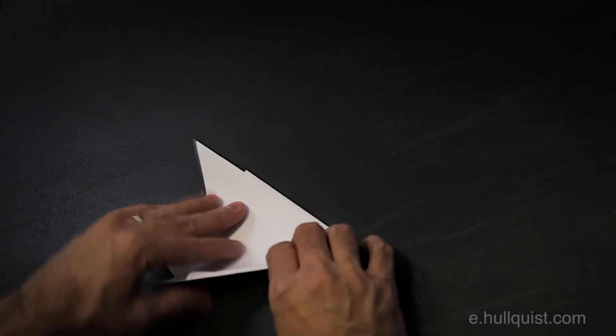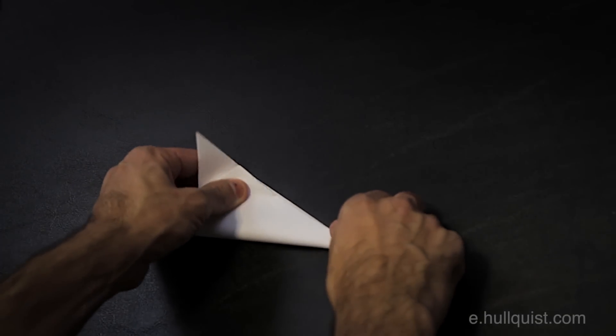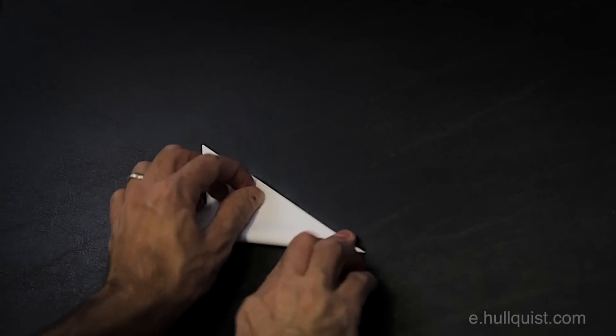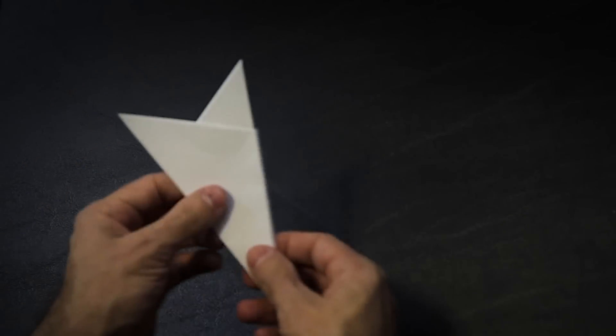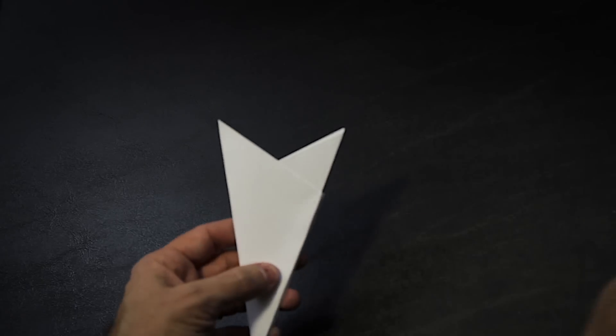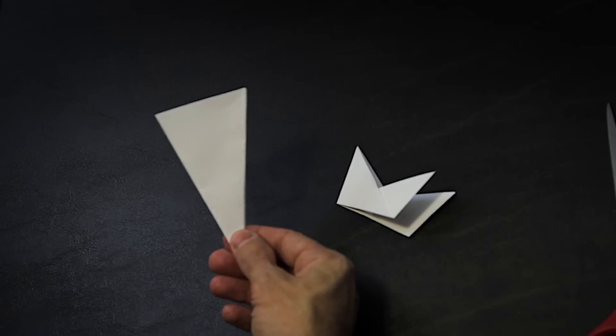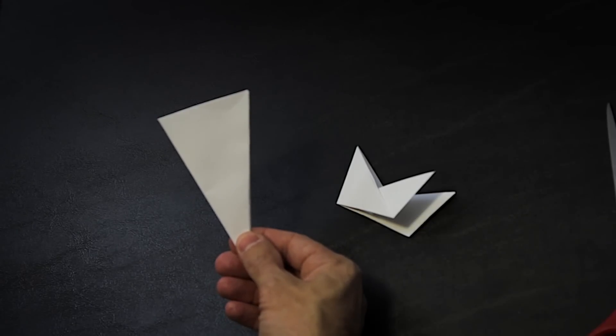Fold the paper over one more time like this. Now remove the excess paper by cutting off the top of the cone at this lowest edge. You are now ready to design your snowflake.